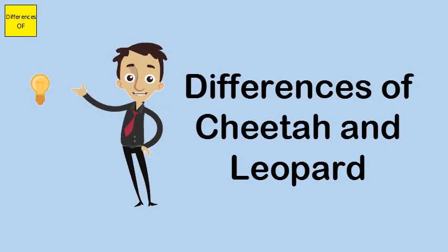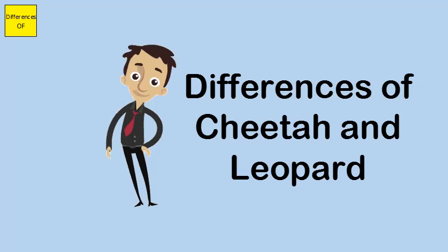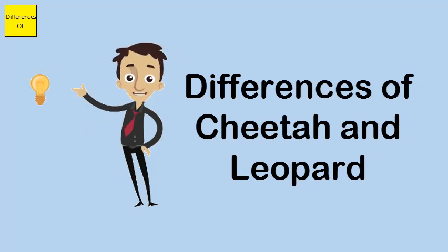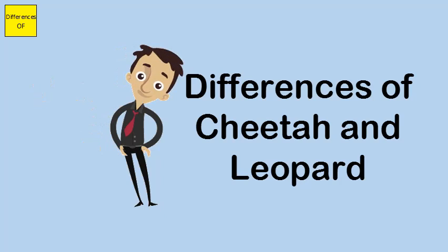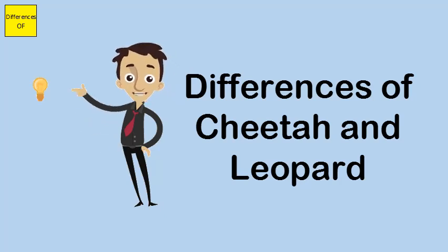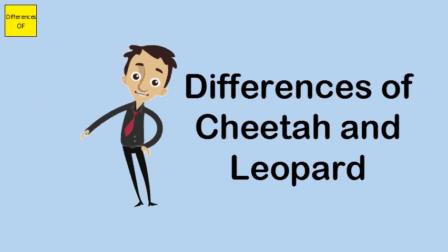Cheetah has a total length of 43 to 59 inches in head and body. Leopard has a total length of 35 to 75 inches in head and body. Cheetah is found in Africa and southwestern Asia. Leopard is found in sub-Saharan Asia, including the Indian subcontinent.